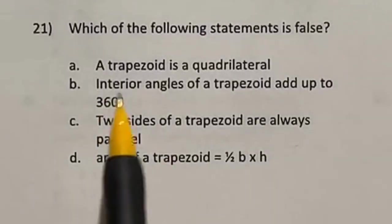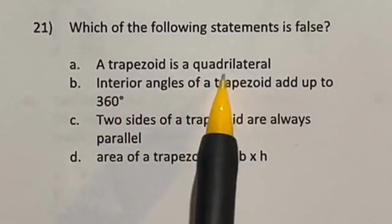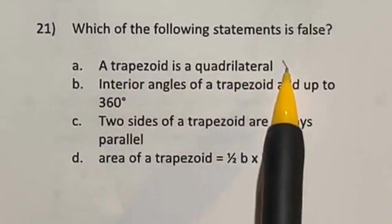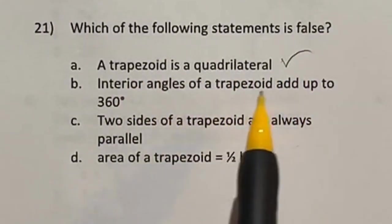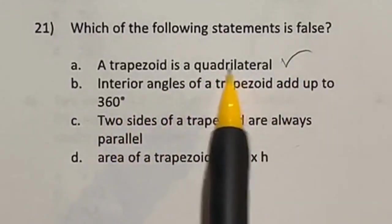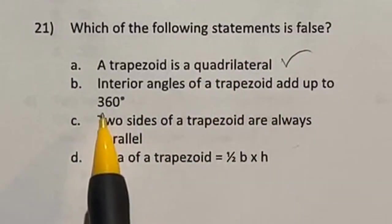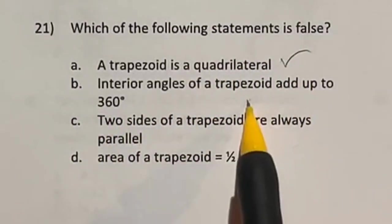So which of the following statements are false? A trapezoid is a quadrilateral. Quadrilateral means four sides. A trapezoid does indeed have four sides, so that one's good. We have interior angles of a trapezoid add up to 360. Well, any quadrilateral, if you add up all the angles on the inside, they always will add to 360. So that is true as well.